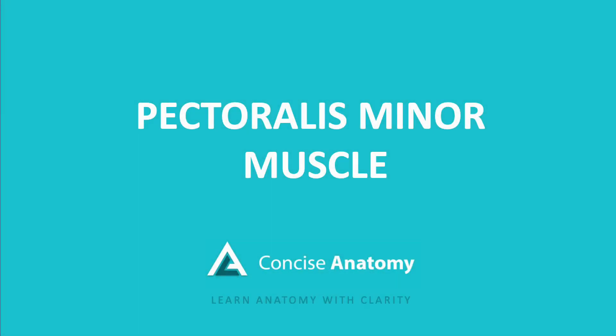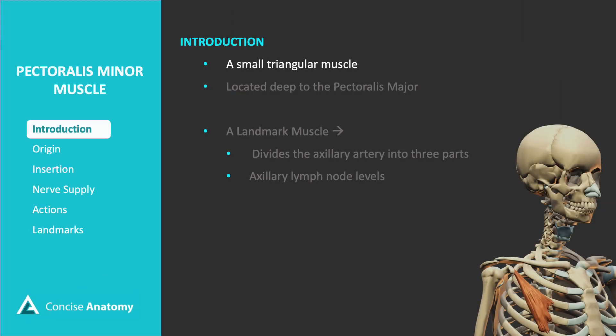Today, let's explore the pectoralis minor. The pectoralis minor is a small triangular muscle located deep to the pectoralis major.